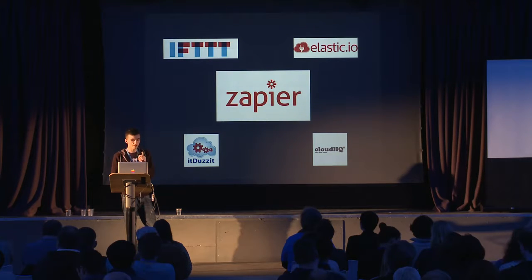One of these services is If This Then That — an API integration service, though it's more geared up for automating aspects of your personal life rather than your business. There's also Zapier — I'm not too sure how that's pronounced — which is more of a business automation service, similar to If This Then That but more geared towards automating your business.